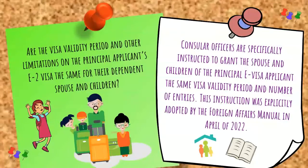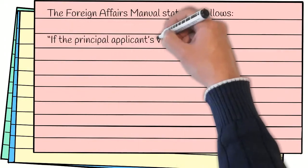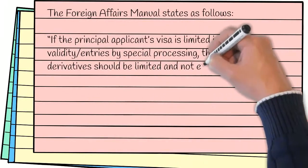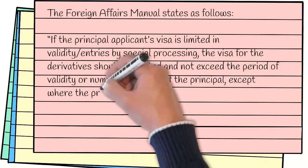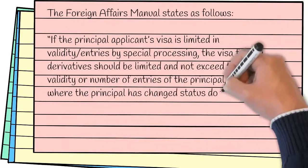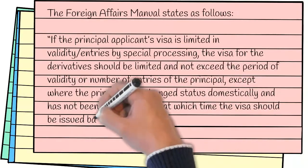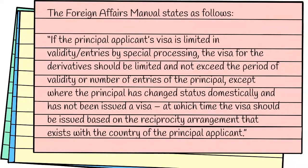The Foreign Affairs Manual states as follows: If the principal applicant's visa is limited in validity or entries by special processing, the visa for the derivative should be limited and not exceed the period of validity or number of entries of the principal, except where the principal has changed status domestically and has not been issued a visa, at which time the visa should be issued based on the reciprocity arrangement that exists with the country of the principal applicant.